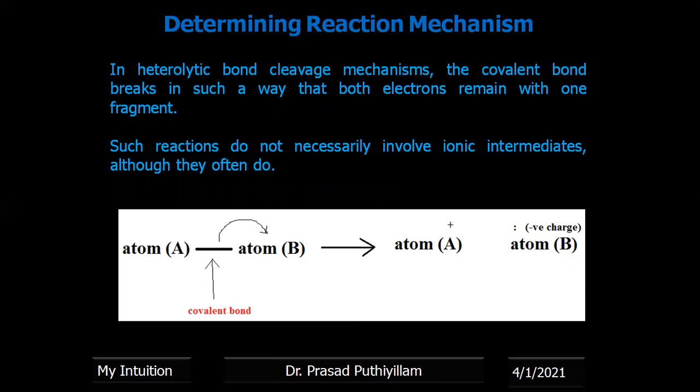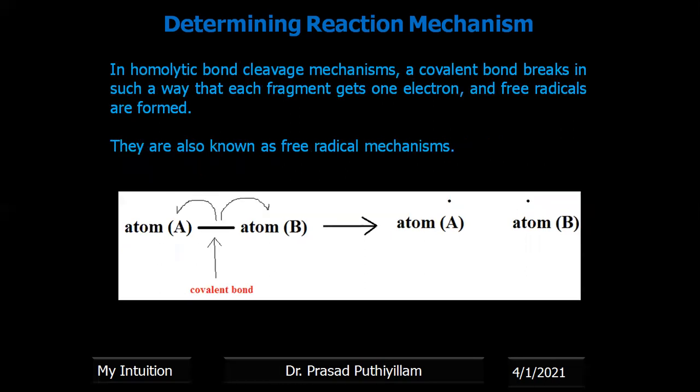In this type of cleavage, the electrons remain with one fragment, and in most cases ionic intermediates are also involved. In homolytic bond cleavage mechanism, a covalent bond breaks such that each fragment gets one electron each, meaning it becomes a free radical. Atom A is connected to atom B, but they have almost the same electronegativity, so each atom gets its own electron and becomes a free radical.